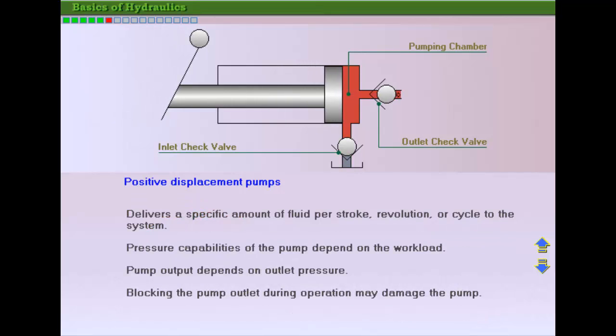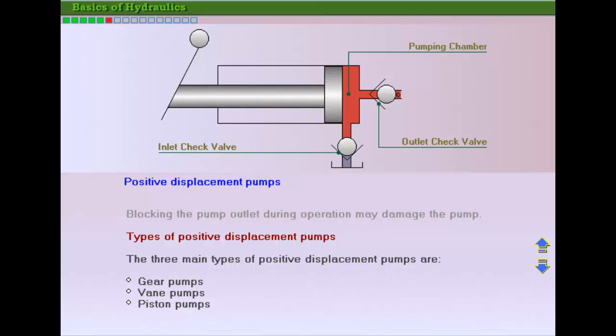Positive displacement pumps provide a pulsating flow, delivering a specific volume of fluid per revolution of the pump. The three most widely used types of positive displacement pumps are gear, vane, and piston pumps.